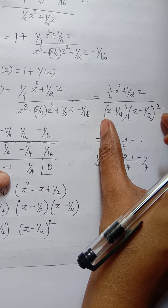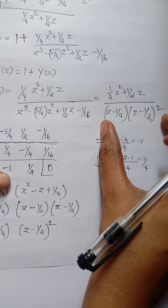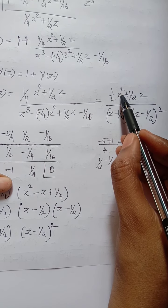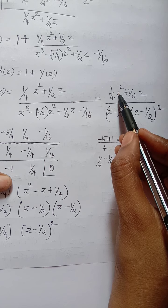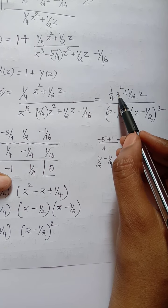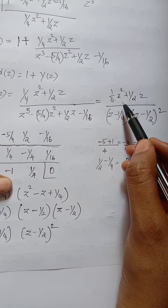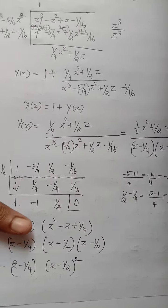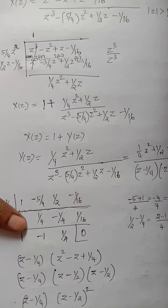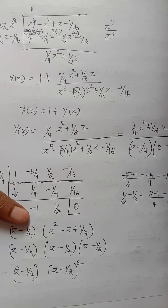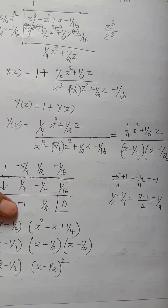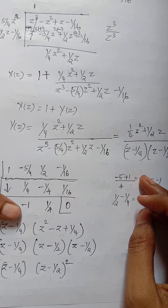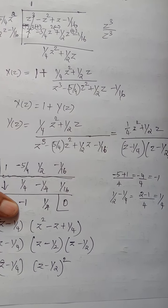To find the partial fraction of Y(z), first check that it is in positive powers, then divide by z, and find the coefficients. The procedure is the same as before. Try this problem on your own and the answers will be posted.